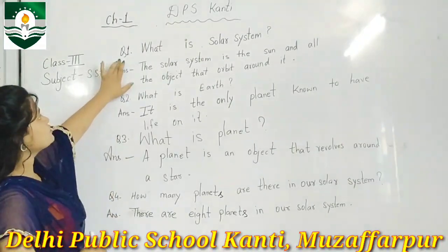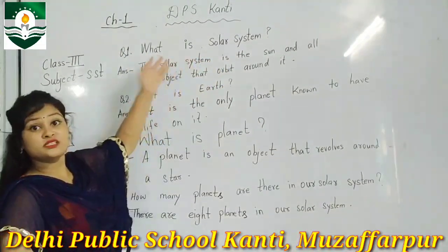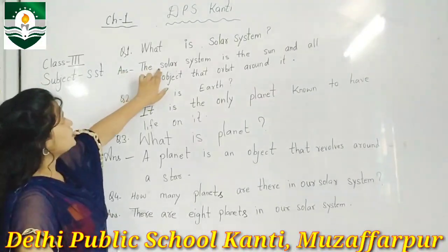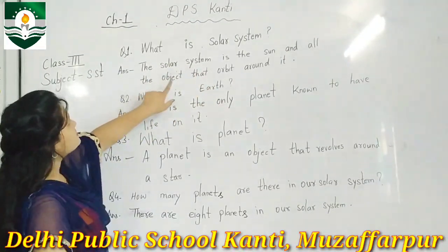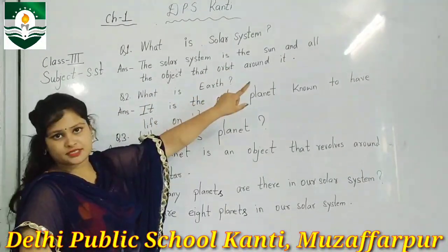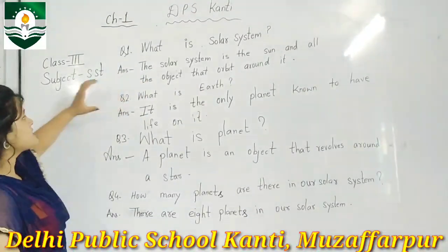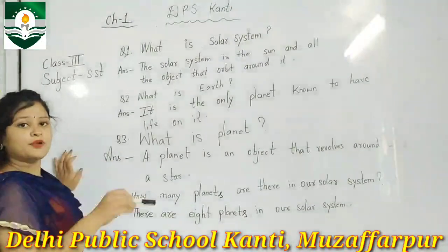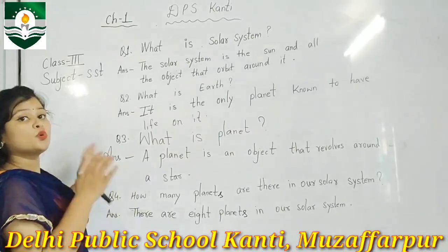Our first question is: what is the solar system? The solar system is the sun and all the objects that orbit around it. What is the solar system?